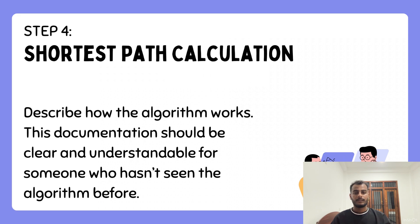Step four — shortest path calculation. We need to find the shortest path between all paired odd-degree vertices. The goal is to minimize the distance added when pairing vertices. This can be done using algorithms like Dijkstra's algorithm and Floyd-Warshall algorithm, which help us find the shortest path between two vertices in a weighted graph. Once the shortest paths are calculated, we add these paths to the graph and traverse it to get the solution.